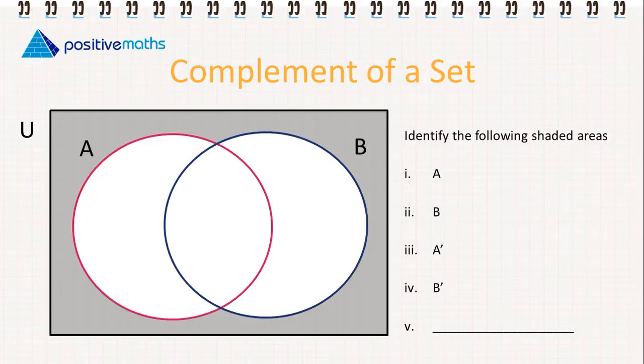And the final one. So this doesn't include any elements in A or B. So we say that this is A union B complement.